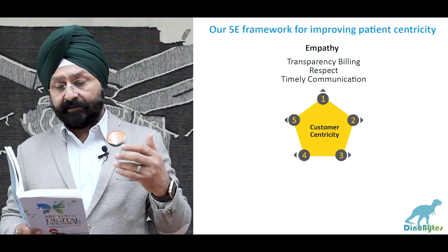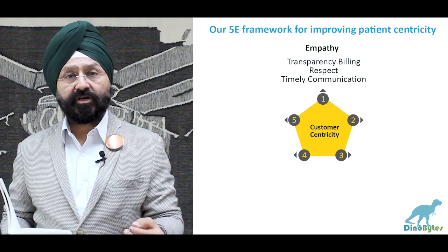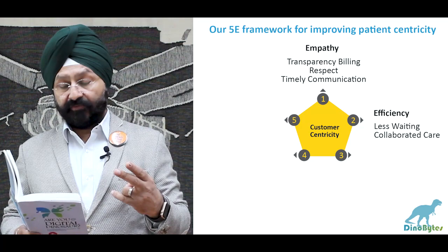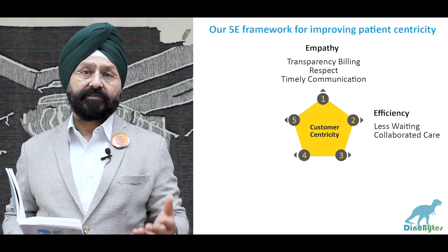Number 1 is Empathy — the hospital or organization should show transparency in billing, treat patients with respect, and maintain timely, regular communication about what the billing is going to be. That is very important — show empathy to the patient. Number 2 is Efficiency — with respect to less waiting time, collaborative care, and of course efficient doctors and nurses.